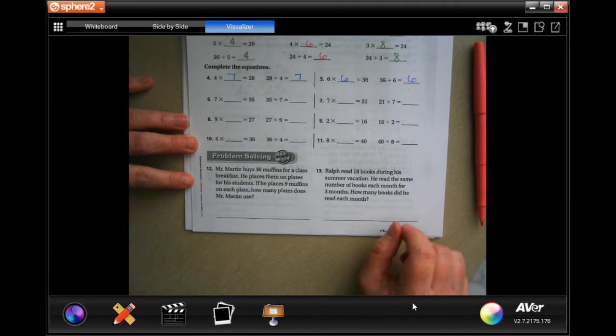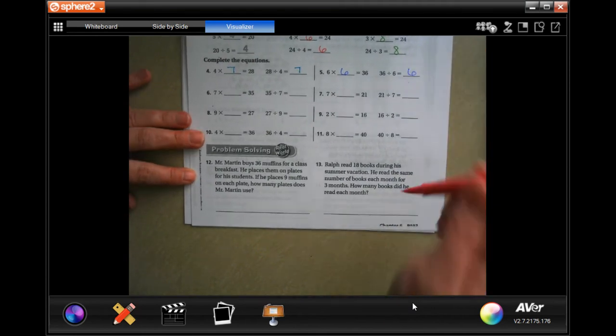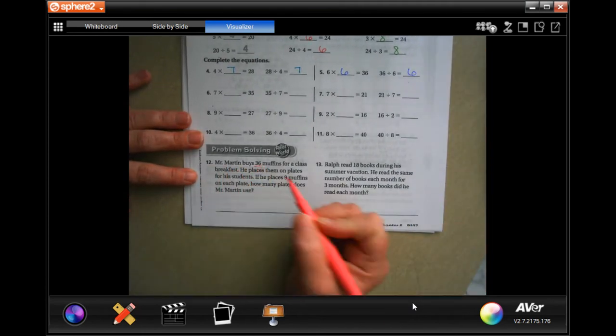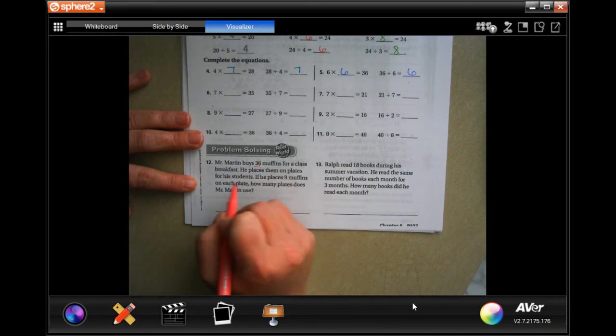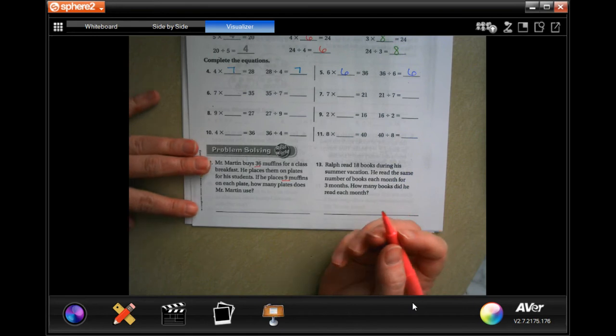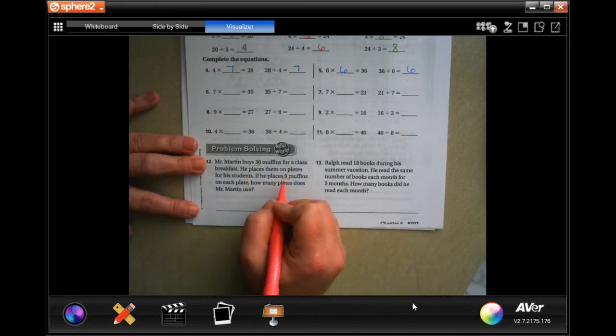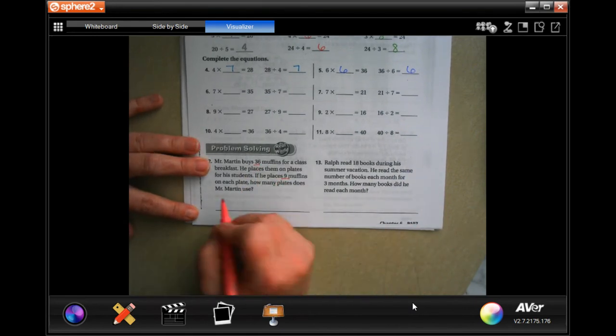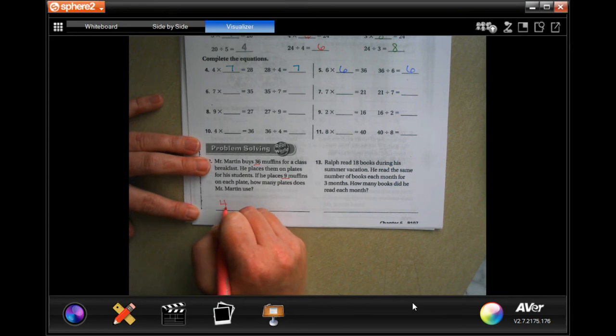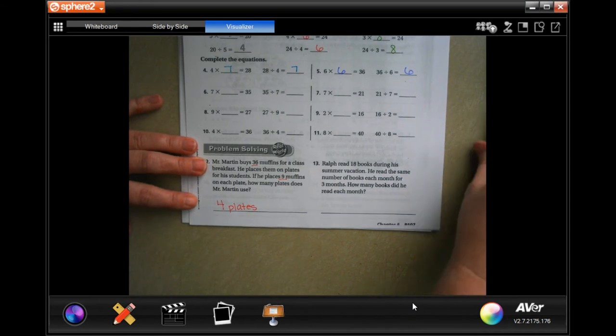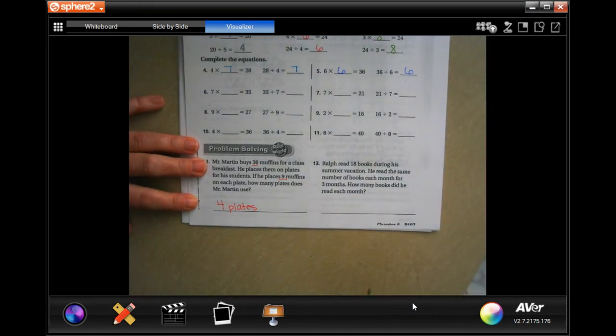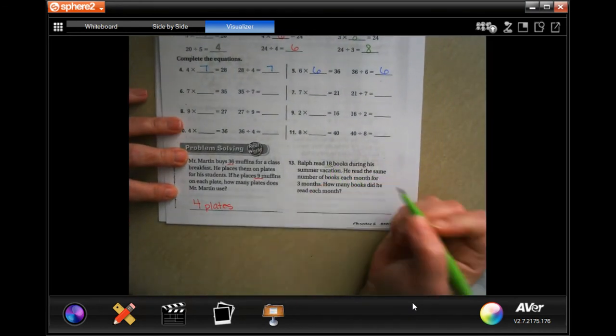Mr. Martin buys 36 muffins for class practice. He places them on plates for his students. If he places nine muffins on each plate, how many plates does Mr. Martin use? Well, nine times what is 36? Nine times four, so four plates.